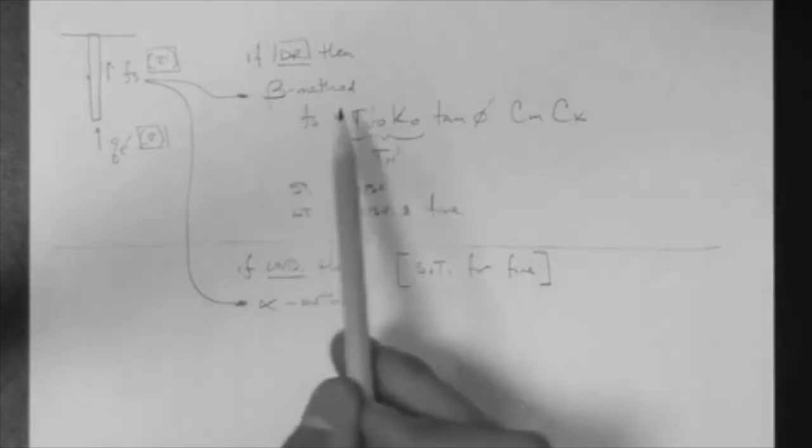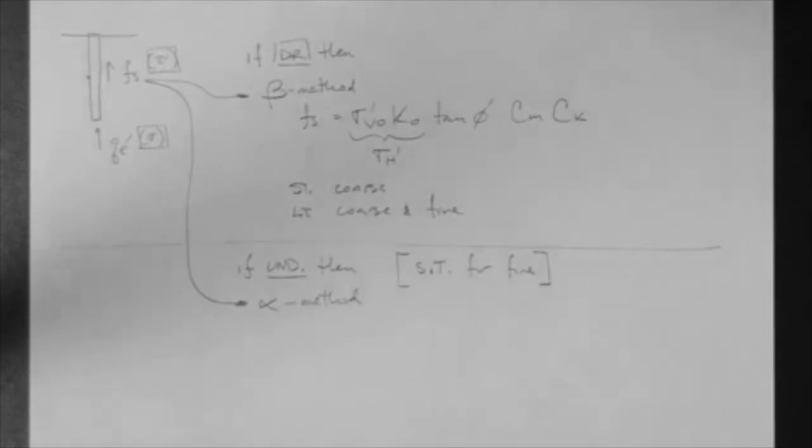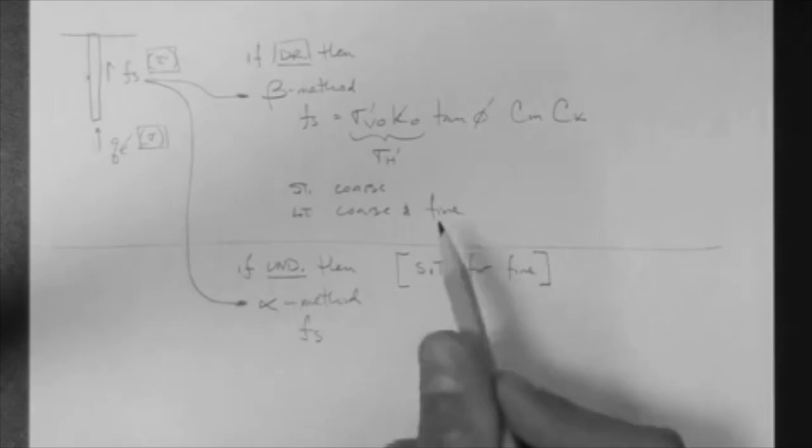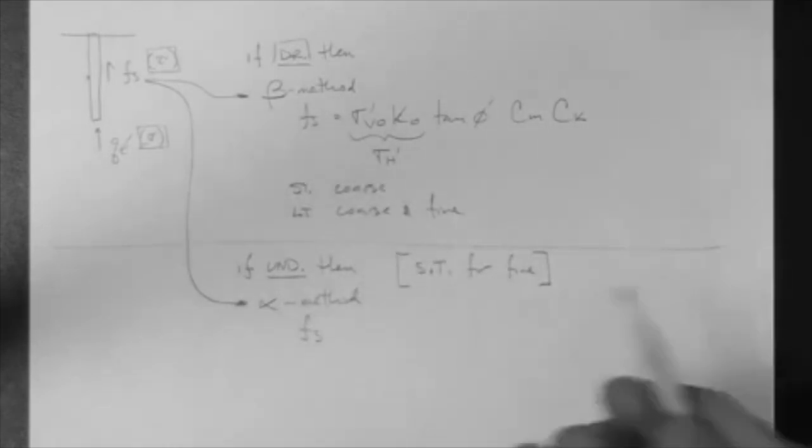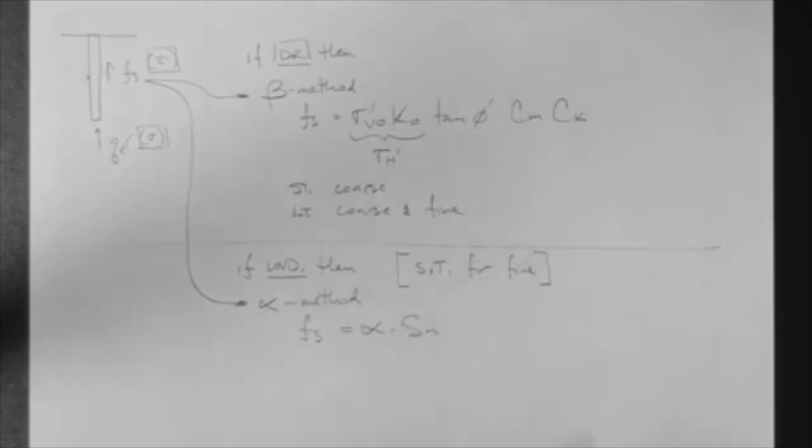So, you know how to use the beta method. You have examples, etc. But the alpha method is new. So what is the alpha method? Well, it's a way to get Fs. Beta method Fs, alpha method also Fs. This is alpha times SU, very simple. What SU? The SU of the layer in question.